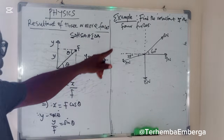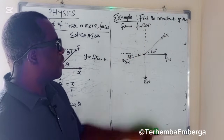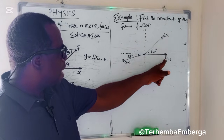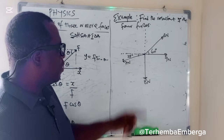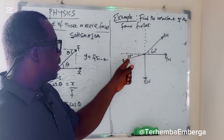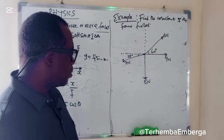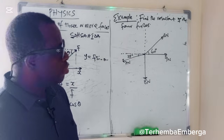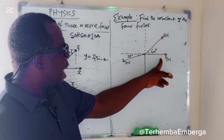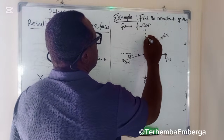Now, having looked at this, let's look at this example: find the resultant of the four forces. In this diagram we have four forces — 4 N, 9 N, 8 N, and 7 N. The 4 N force is inclined at an angle of 60°, and the 7 N force is inclined at an angle of 25°. We are going to resolve the 4 N force on both the y-axis and the x-axis.